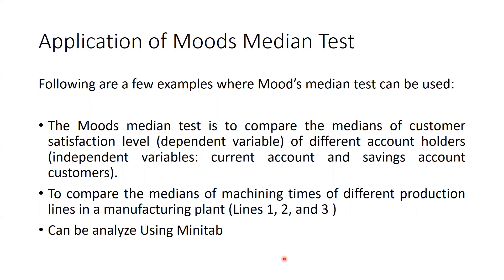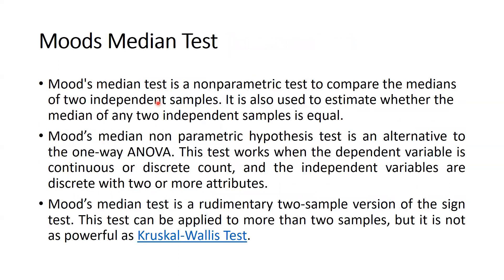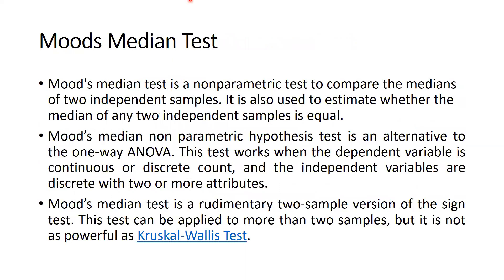It can also be used to compare median matching times across different production lines — line one, two, and three — in a manufacturing plant. This can be analyzed using Minitab, since SPSS does not have this facility for Mood's Median Test. I will show you in upcoming videos how to calculate Mood's Median Test in Minitab. I hope this video was helpful — I will share all the non-parametric test links in the description box. Thank you, keep watching, stay tuned.